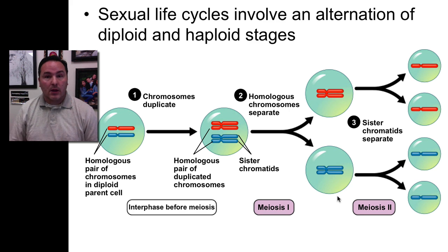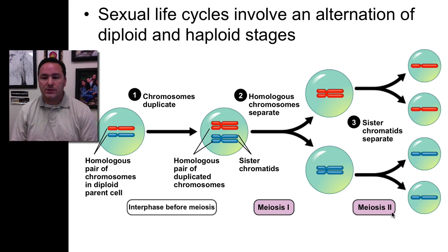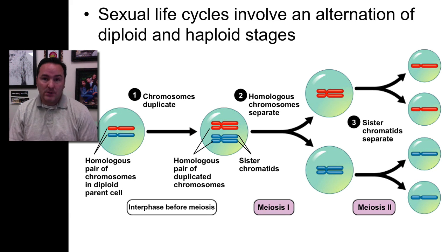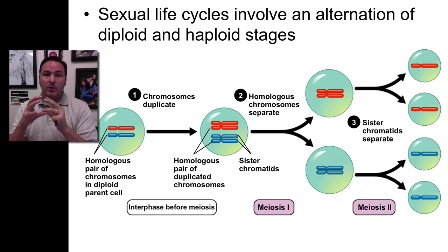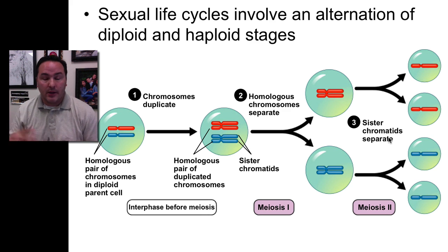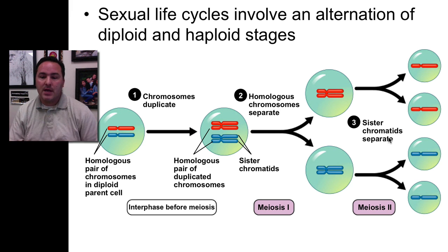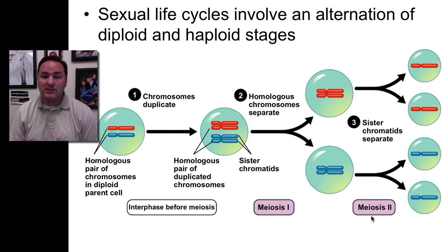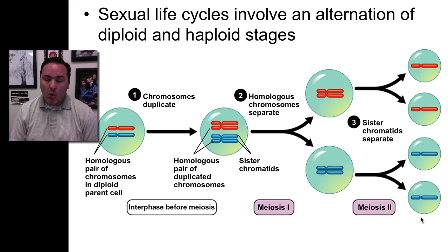Then in meiosis II, there is a second cellular division where sister chromatids separate. This should sound familiar because that's what happens in mitosis — you start with a full diploid cell, it doubles its DNA, goes through one cell division, and becomes identical to the original, with sister chromatids separating. But in meiosis, sister chromatids separate in meiosis II. So meiosis II is very much like mitosis, except you start with a haploid cell, and you end up with four haploid cells from one original cell.